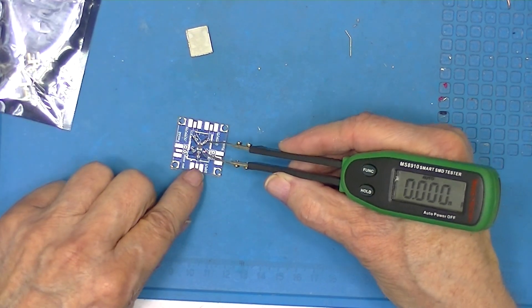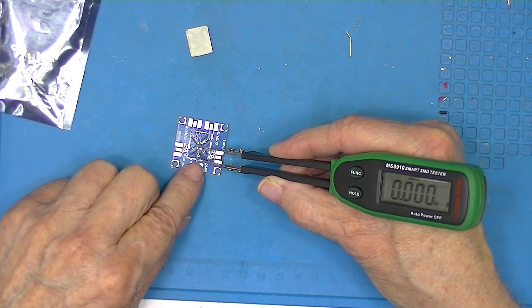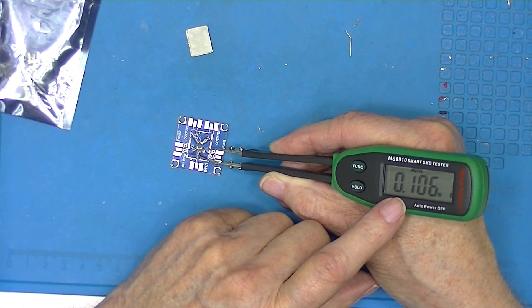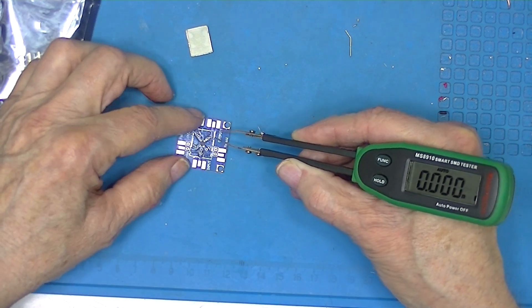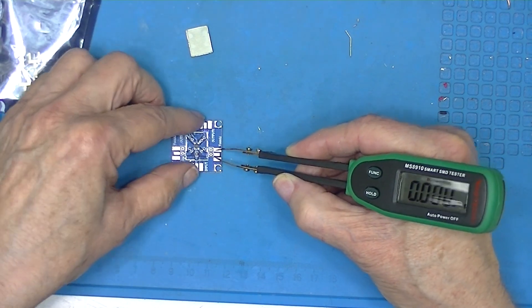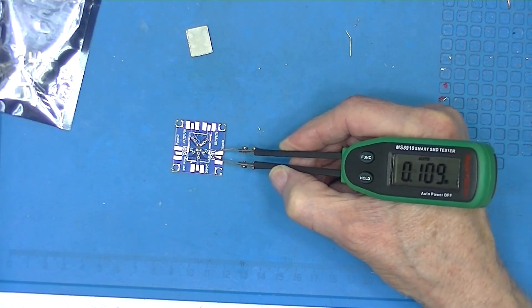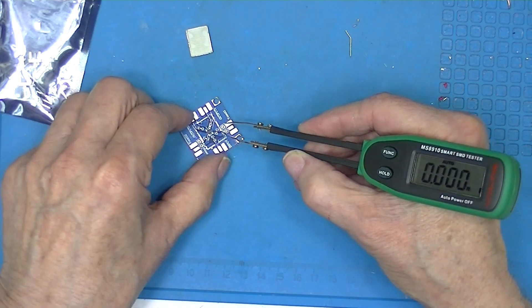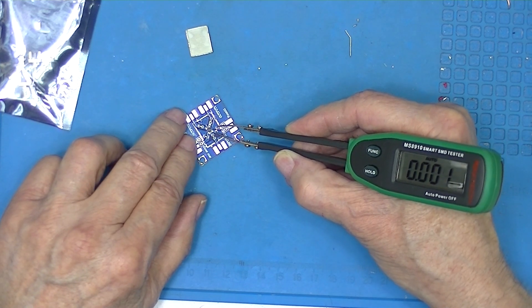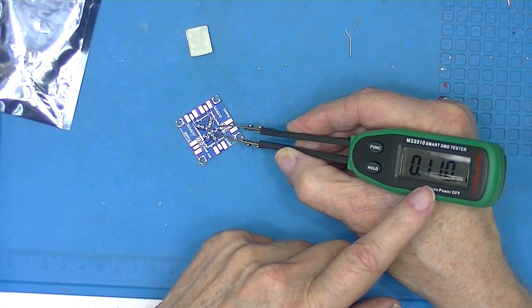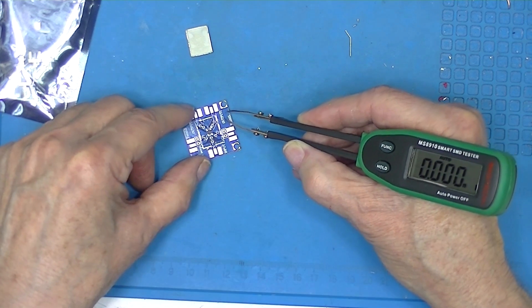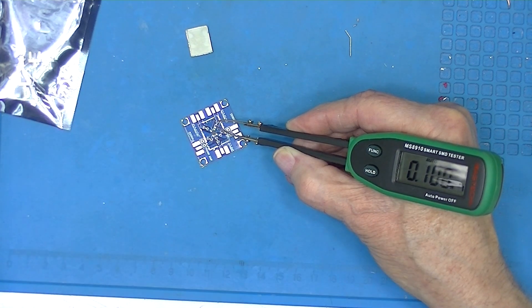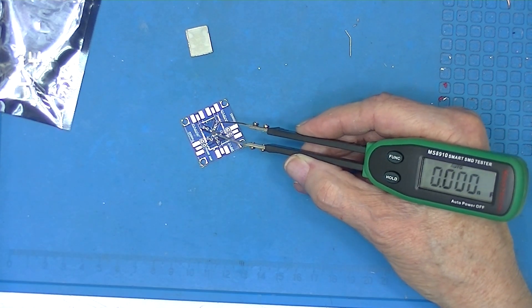I'm going to measure the capacitors. This will be one of the inputs or outputs depending on what you do with it - 0.1 nanofarad. This will be one of the bypass capacitors - also 0.1 nanofarad. I'll go right across the chip - 0.1 nanofarad. Here's another input-output, 0.1. So I'm going to say they're all 0.1 nanofarads.